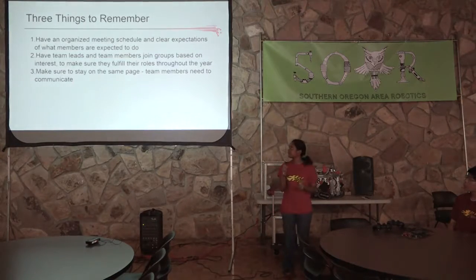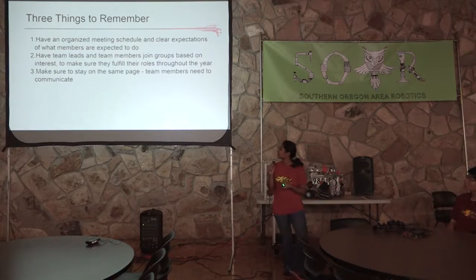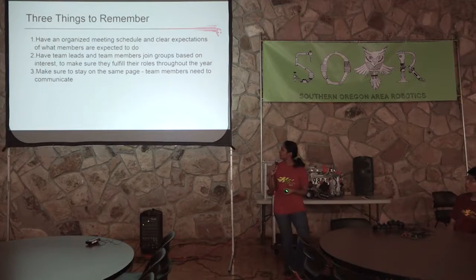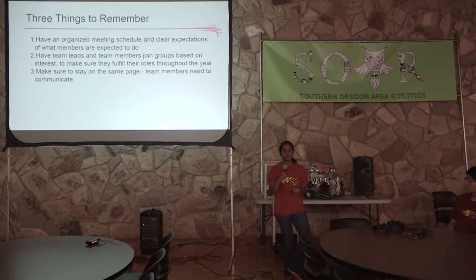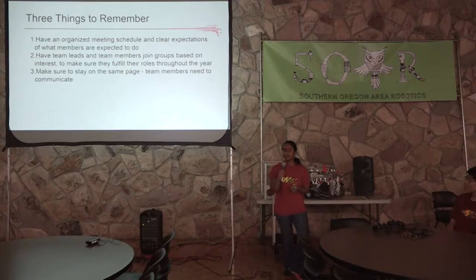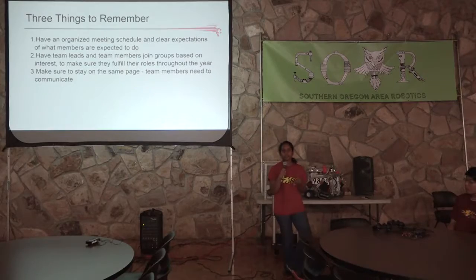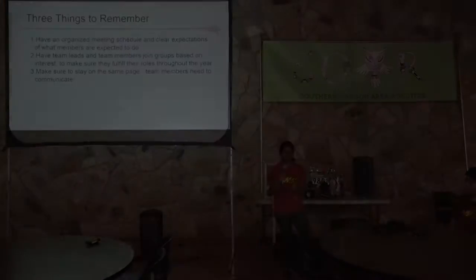Finally, three key things to remember. Number one, you should have a clear, organized meeting schedule so you have enough time to get the robot built and all the work done. Next, make sure the team leads and team members are communicating and getting things done. The final thing is to make sure that everyone is always on the same page — the show-and-tell session at the beginning of each meeting is super helpful for making sure everyone knows what's happening in the team.